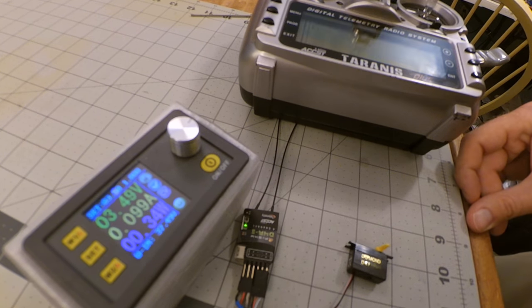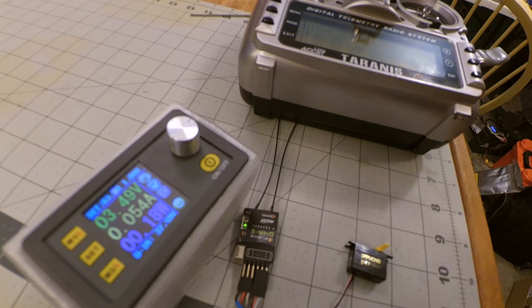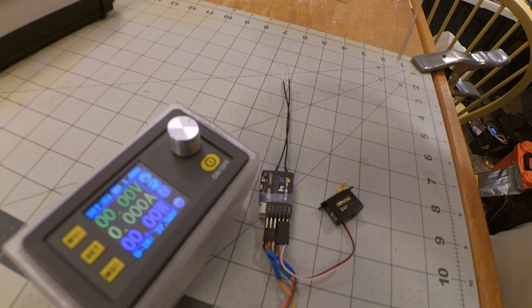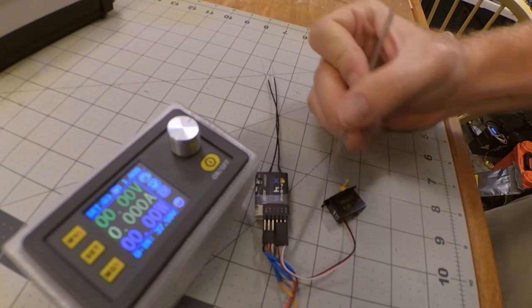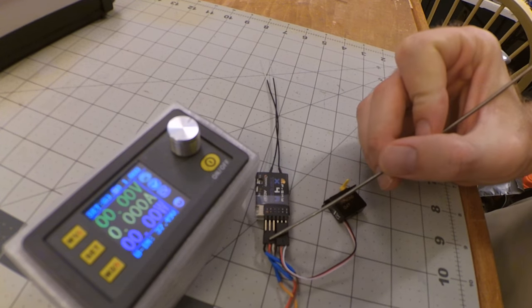So let's go ahead and test the X4R receiver and see what we get. Here we have the X4R receiver, we've got the servo plugged into channel two, we've got the power on the S.BUS port.